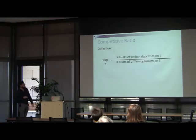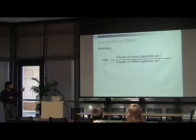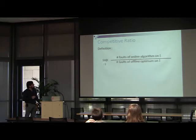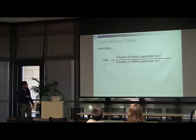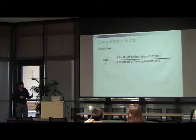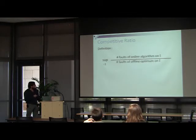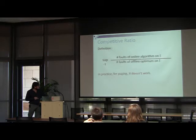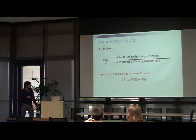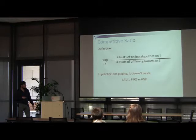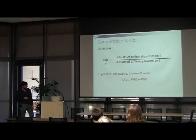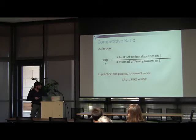As you know, we always study these things under a competitive ratio — theoreticians do. We use the competitive ratio, which takes the cost of the number of faults of the online algorithm and compares it to the number of faults on the same sequence by an offline algorithm that knows the future, then takes the worst-case analysis of that ratio. As we know, in practice for paging it doesn't work. It predicts, for example, that LRU is as bad as FIFO, which is as bad as FWF, whereas in reality LRU is better — so this result is not useful in practice.